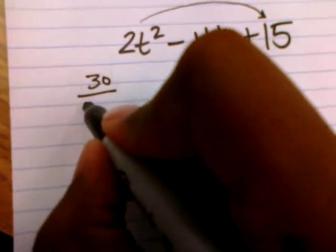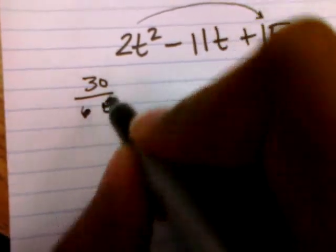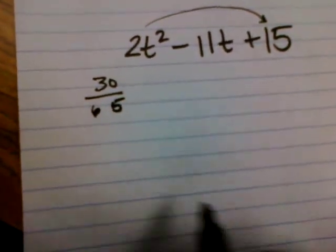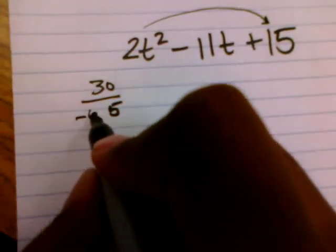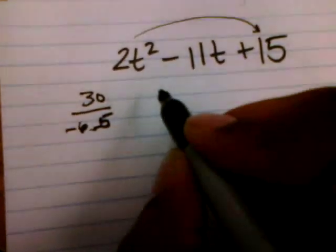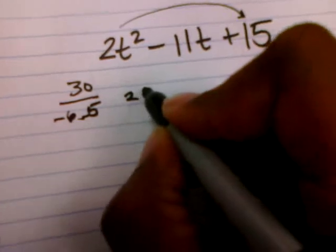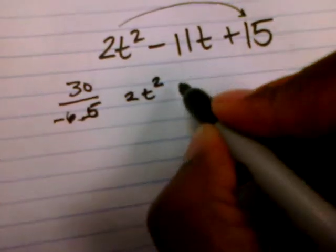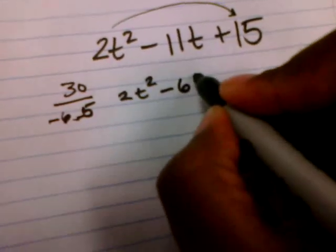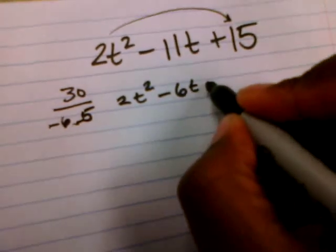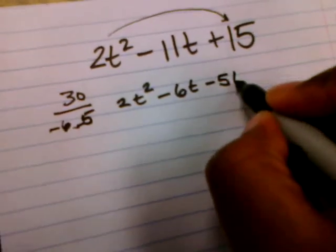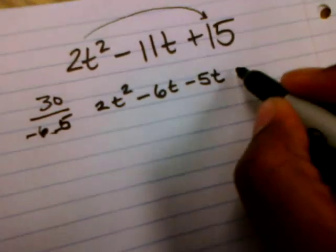Let's try 6 and 5. 6 and 5 will work if both 6 and 5 are negative. So I'm going to rewrite this as 2t squared minus 6t minus 5t plus 15.